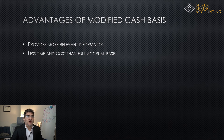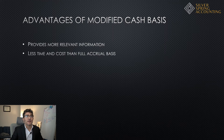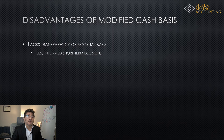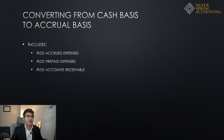The advantage of modified cash basis is that it provides more relevant information than pure cash basis but without the time or cost needed for full accrual basis accounting. The disadvantages are that it still lacks the transparency of accrual basis when it comes to expenses and revenue, and can still result in less informed short-term financial decisions.